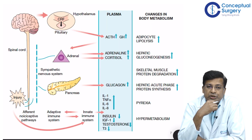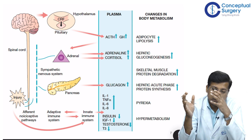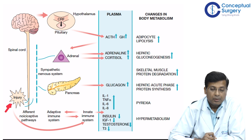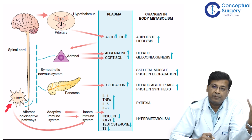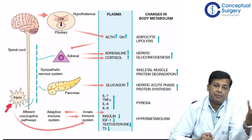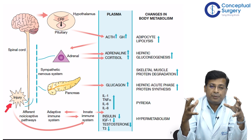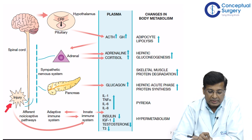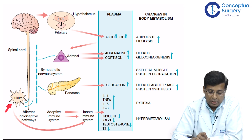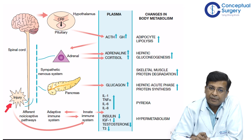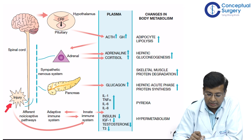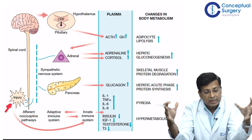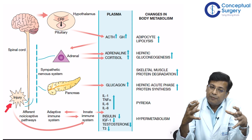This diagram summarizes all that happens after a person sustains an injury. When injury happens, an afferent nociceptive pathway senses the insult — for example, after surgery, the free nerve endings tell the spinal cord and brain that injury has occurred. The brain sends a stimulus to the hypothalamus and pituitary. The hypothalamus secretes corticotropin releasing factor, which then signals the pituitary to increase production of ACTH and growth hormone, both of which help channel and mobilize the fuel responsible for the reparative process.